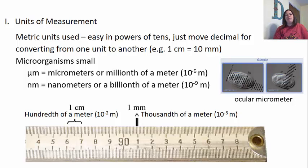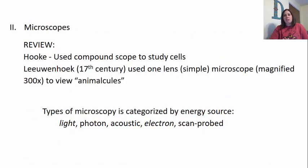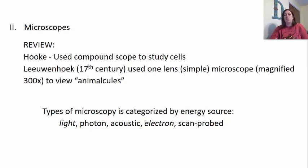When you're looking at the microscope, a lot of times it may have a little ruler on it for your micrometers or nanometers. As a quick review from chapter one, Robert Hooke was one of the main scientists who used the compound scope to study cells — he was the first to coin the term 'cell.' Leeuwenhoek in the 17th century used one lens, a simple microscope, to magnify structures found in stream water, lake water, and pond water. With his simple microscope he was able to magnify them 300 times, and that's why he called them little animals.